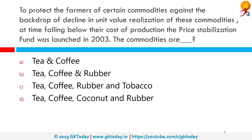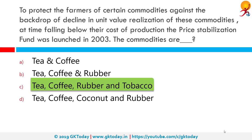To protect farmers of certain commodities against a decline in value realization falling below their cost of production, the Price Stabilization Fund was launched in 2003. The commodities are tea, coffee, rubber and tobacco.